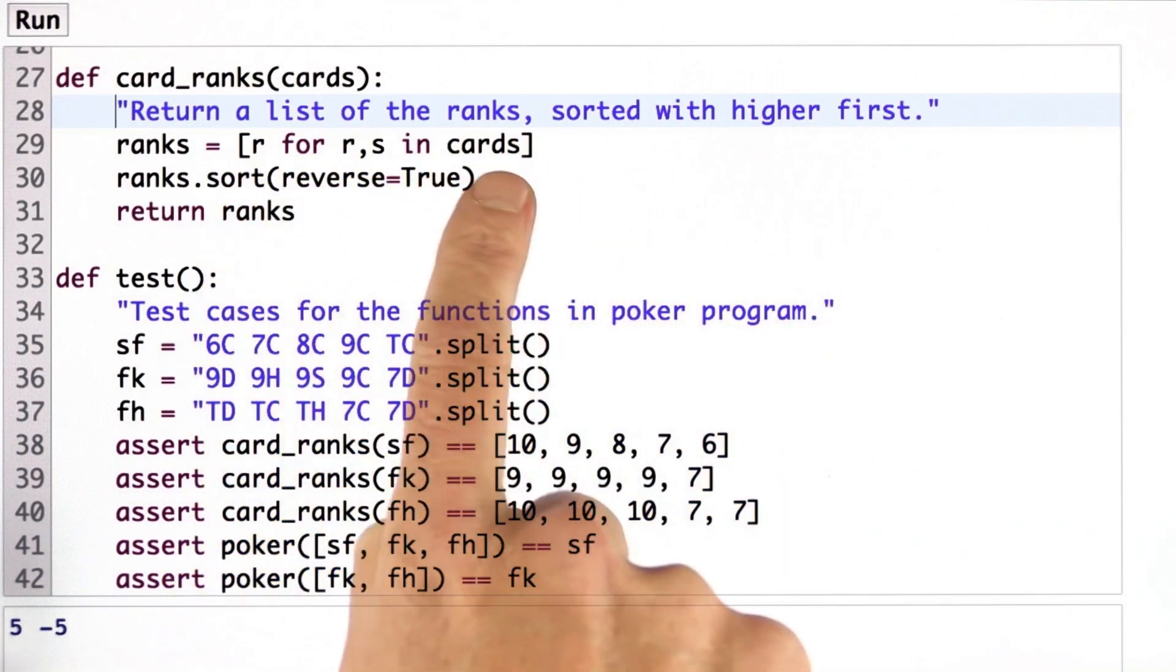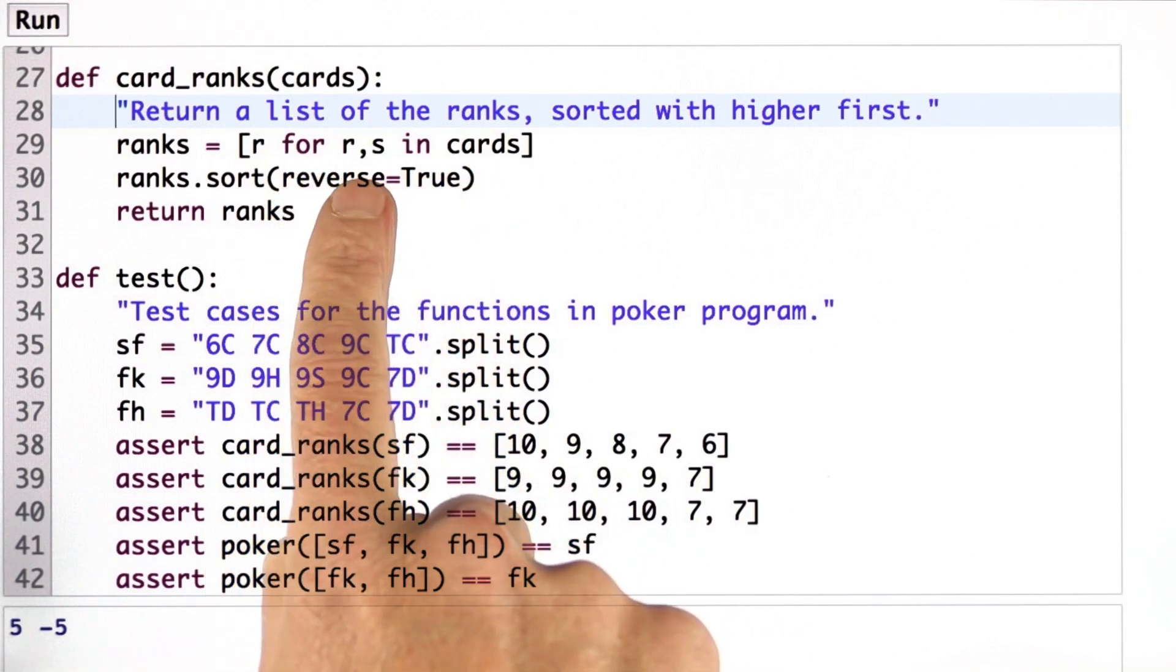We pulled the ranks out of the cards. So here we're iterating over the cards and we're having two values: the rank and the suit.